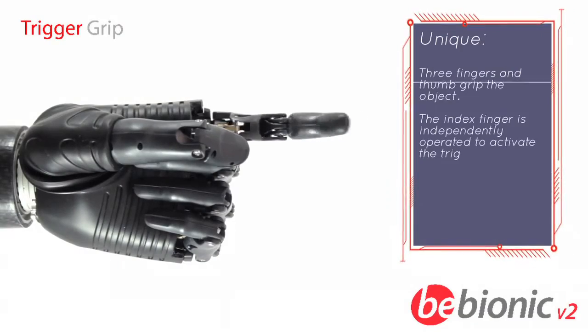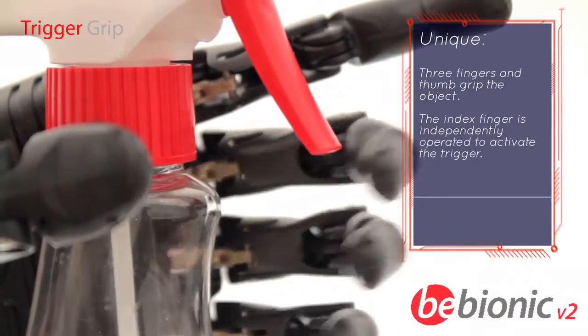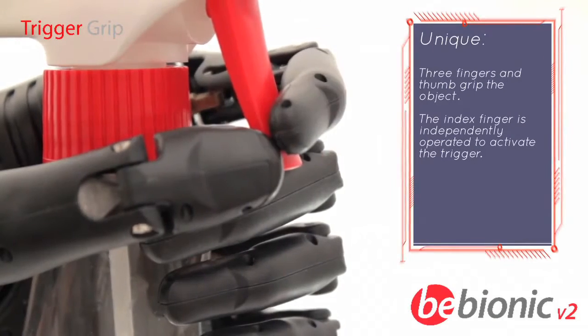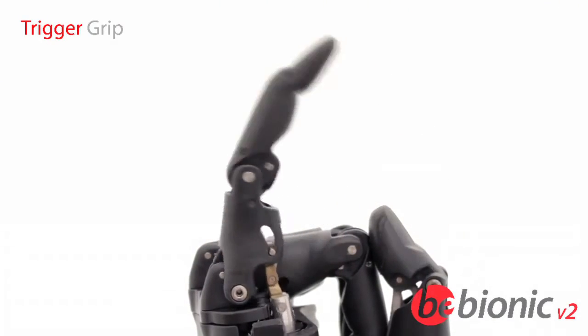Again, for the first time in a prosthetic hand, users can hold and operate a trigger-activated device, such as a household cleaning spray or hair dryer.